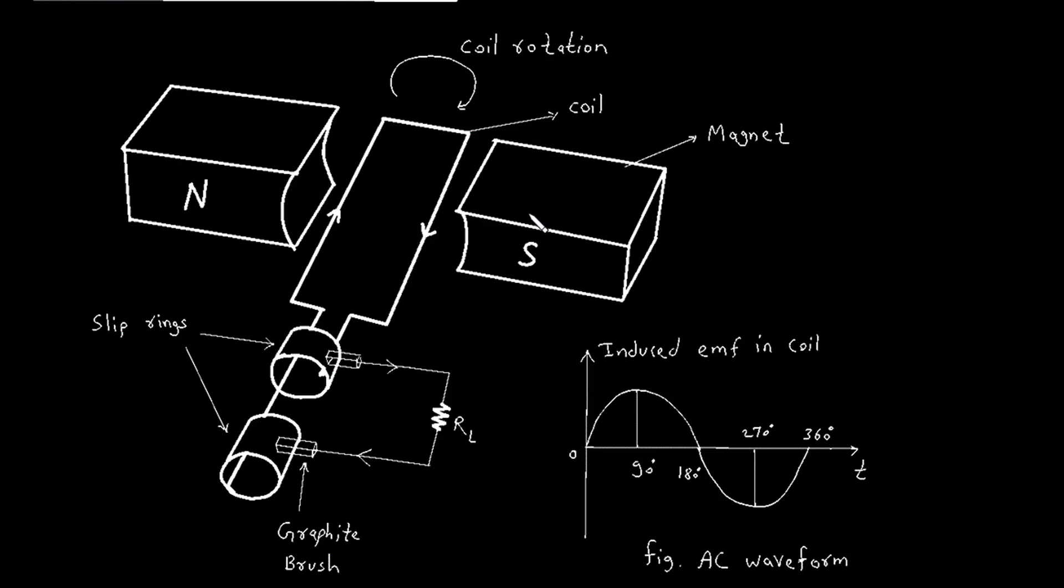Now here we can see there are two permanent magnets and this is a single turn coil. This coil is made from aluminum or copper or any other conducting material.